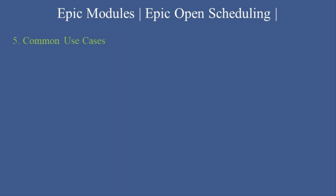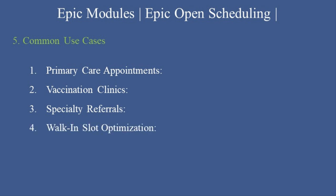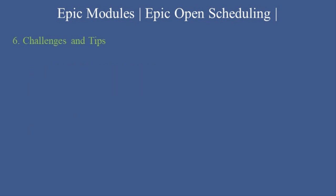Common Use Cases. Epic Open Scheduling is ideal for various scenarios, such as: 1. Primary Care Appointments — enable patients to book routine visits directly. 2. Vaccination Clinics — streamline scheduling for flu shots, COVID-19 vaccines, and more. 3. Specialty Referrals — allow patients with referrals to schedule their specialist appointments easily. 4. Walk-in Slot Optimization — convert unscheduled walk-in slots into bookable time blocks to maximize efficiency.